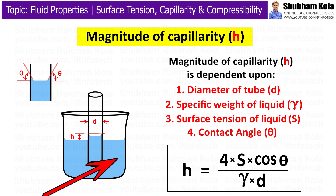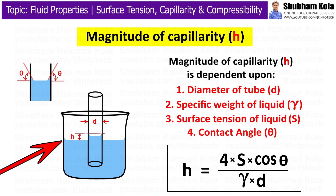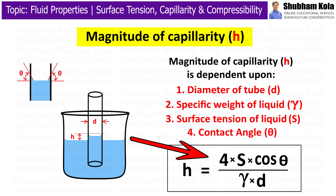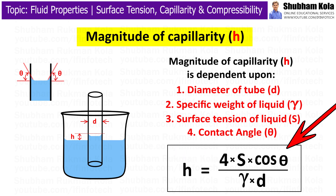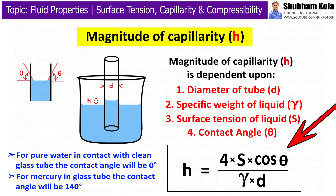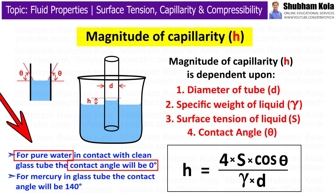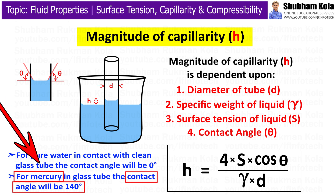The magnitude of capillary — that is, the height of liquid raised or decreased in the capillary tube, indicated as h — is given by the formula: h = 4S·cos(theta) / (gamma · d), where theta is the contact angle. For pure water, the contact angle is zero, and for mercury, the contact angle is 140 degrees.